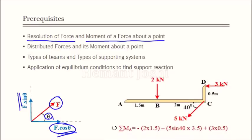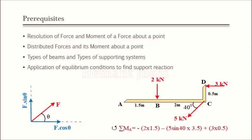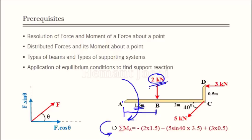Now, to take the moment of a point force about any point — suppose I consider point A, about which I wish to take the moments of three forces 1, 2, and 3. The sign convention used in equilibrium is anticlockwise positive. I am interested to take the moment of the 2 kN force about point A. For a vertical force, the horizontal distance is the required perpendicular distance, which is 1.5. The moment is 2 × 1.5, and observing that it is clockwise, it is minus 2 × 1.5 about point A.